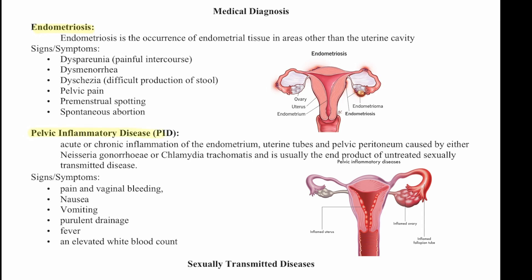Pelvic inflammatory disease is an acute or chronic inflammation of the endometrium, uterine tubes, and pelvic peritoneum, caused by gonorrhea or chlamydia, and is usually the end product of an untreated STD. Signs and symptoms include pain and vaginal bleeding, nausea, vomiting, purulent drainage, fever, and elevated white blood cell count.